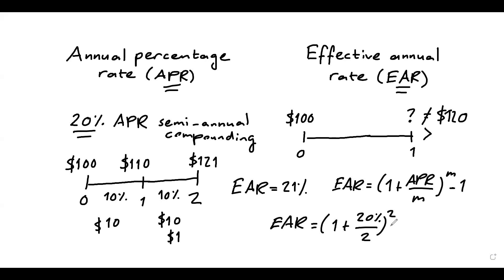So to illustrate this, in this case, EAR is 1 plus 20%, divided by 2, to the power 2, minus 1. And if you make this calculation, that turns out to be 21%.